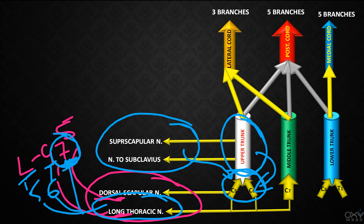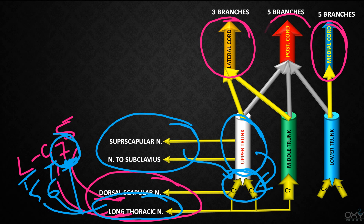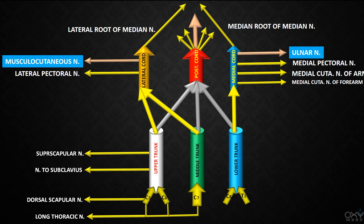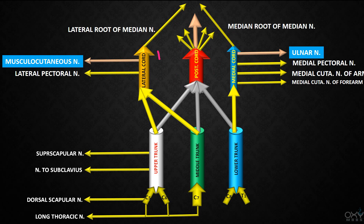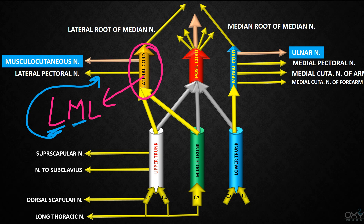Now we will see the branches of the lateral chord first, then the medial chord, and finally the posterior chord. The lateral chord gives 3 branches, while the posterior chord and medial chord each give 5 branches. For the lateral chord there is a nice mnemonic: L, M, L. From the first L comes the lateral pectoral nerve, from M comes the musculocutaneous nerve, and from the second L comes the lateral root of the median nerve.